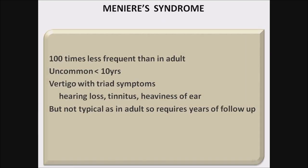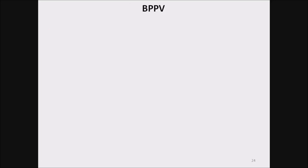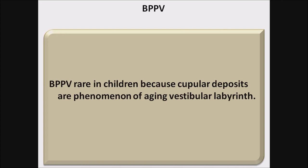Meniere's syndrome is 100 times less frequent in children than in adults because Meniere's disease is a disease of a damaged inner ear — chances increase with age. It is uncommon in children under 10 years. Vertigo with the triad of symptoms — hearing loss, tinnitus, and heaviness of ear — is present but not as typical as in adults, so it requires years of follow-up. BPPV is also very rare in children because cupular deposits are a phenomenon of aging vestibular labyrinth.